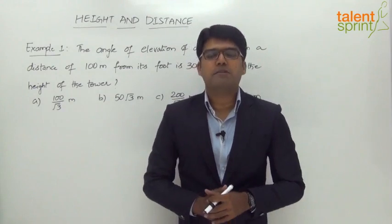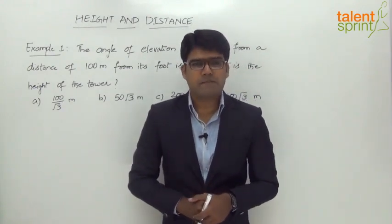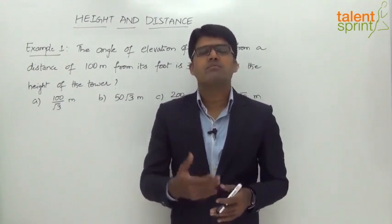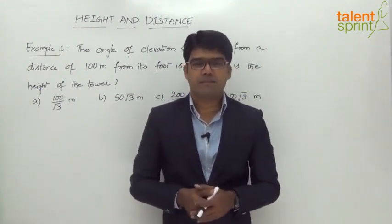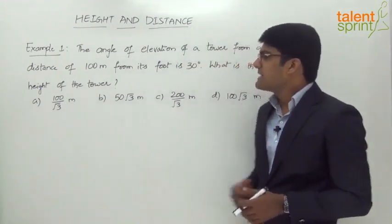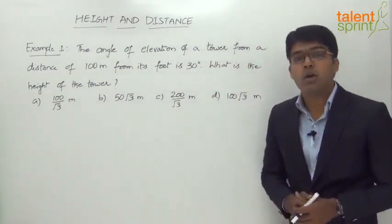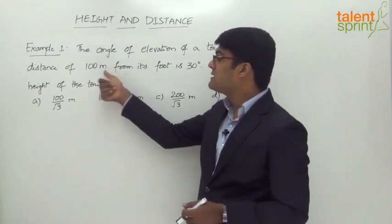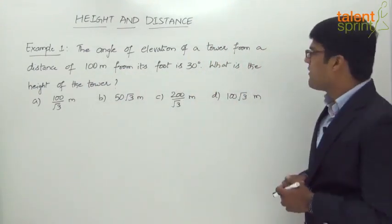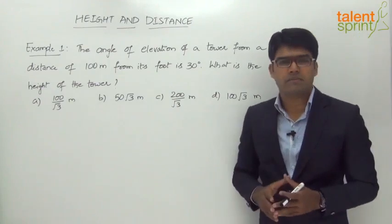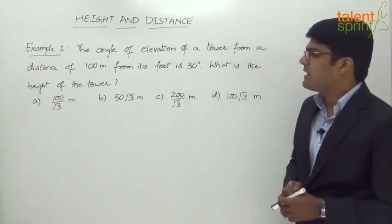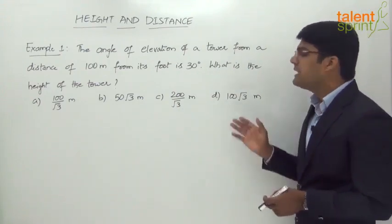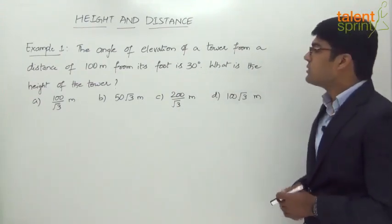Let us now look at the first example from this topic of height and distance. We shall start with a very simple one to get the concept right and then move on to more complicated ones. Example one: the question says the angle of elevation of a tower from a distance of 100 meters from its foot is 30 degrees. What is the height of the tower? The answer options are 100/√3, 50√3, 200/√3, and 100√3.